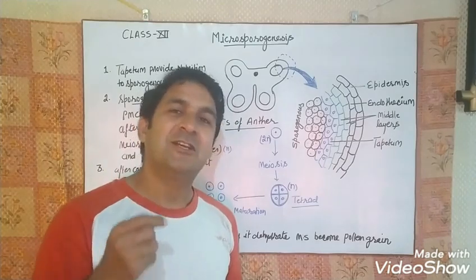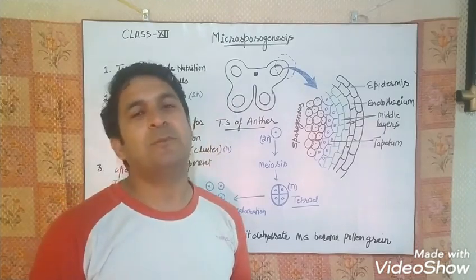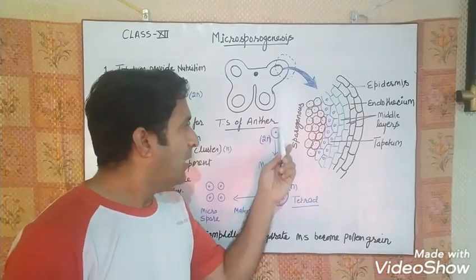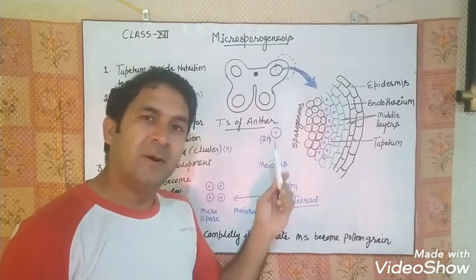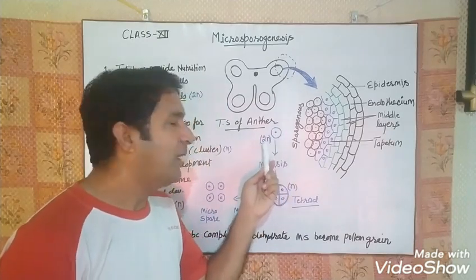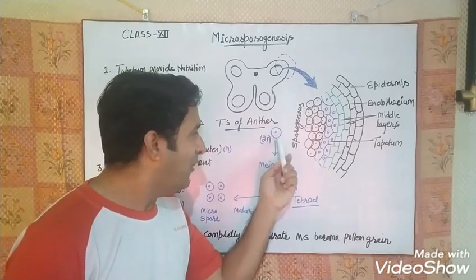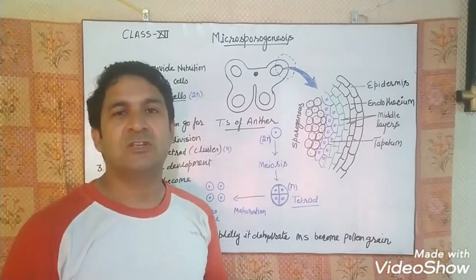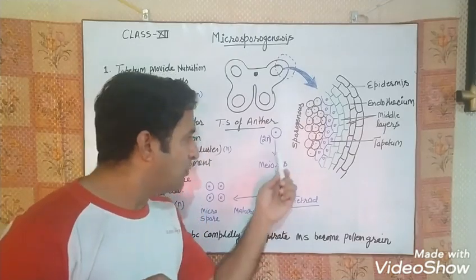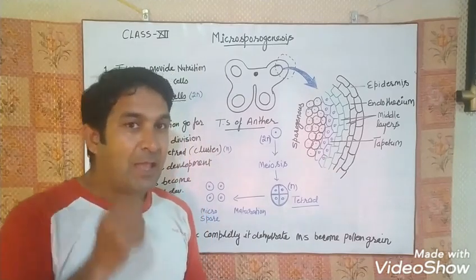Remember PMC — parent mother cell, or primary mother cell — and MMC — microspore mother cell. The sporogynous cell is diploid by nature, and this sporogynous cell will divide by a process called meiosis. After meiosis, a tetrad structure is synthesized.